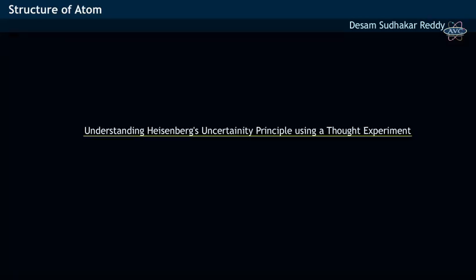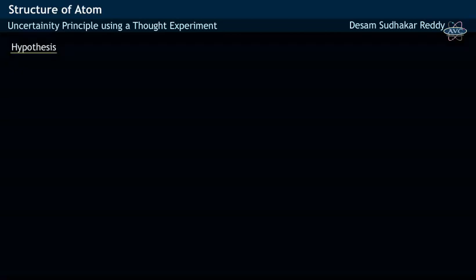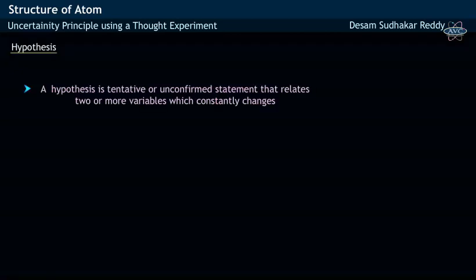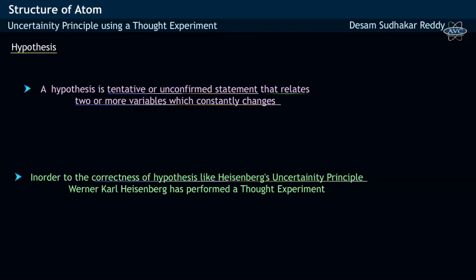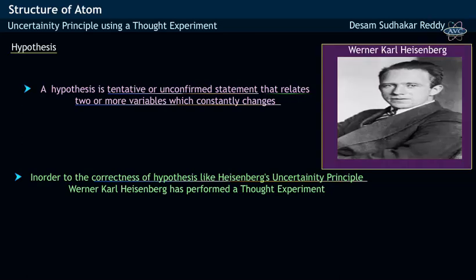Understanding Heisenberg's Uncertainty Principle using a Thought Experiment. Before going into the details of the thought experiment, let us know about hypothesis. A hypothesis is a tentative or unconfirmed statement that relates two or more variables which constantly changes. In order to know the correctness of hypothesis like Heisenberg's Uncertainty Principle, Heisenberg has performed a thought experiment.